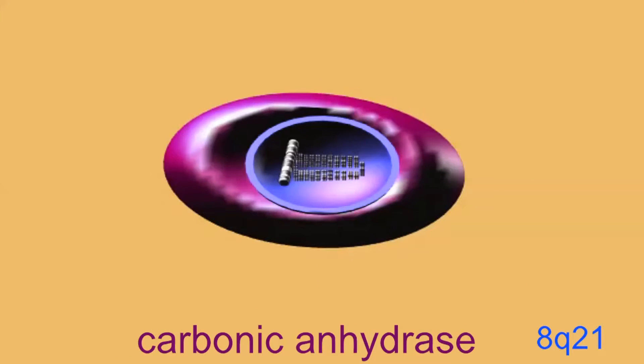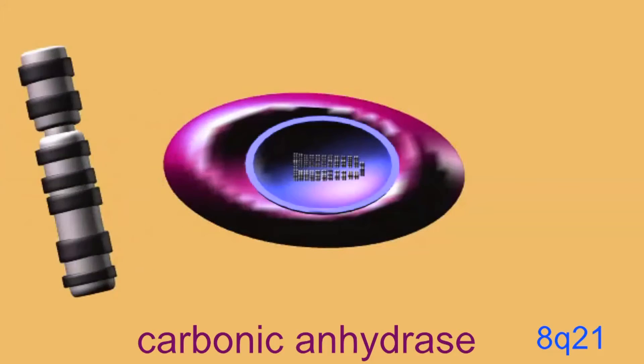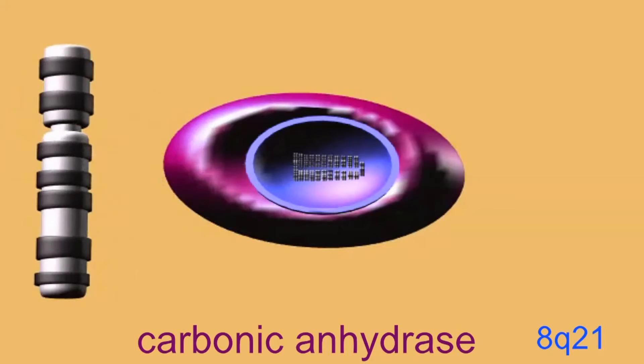The ability of red blood cells to combine carbon dioxide and water to make carbonic acid is determined by the protein carbonic anhydrase, which is encoded by a gene located on chromosome 8q21.